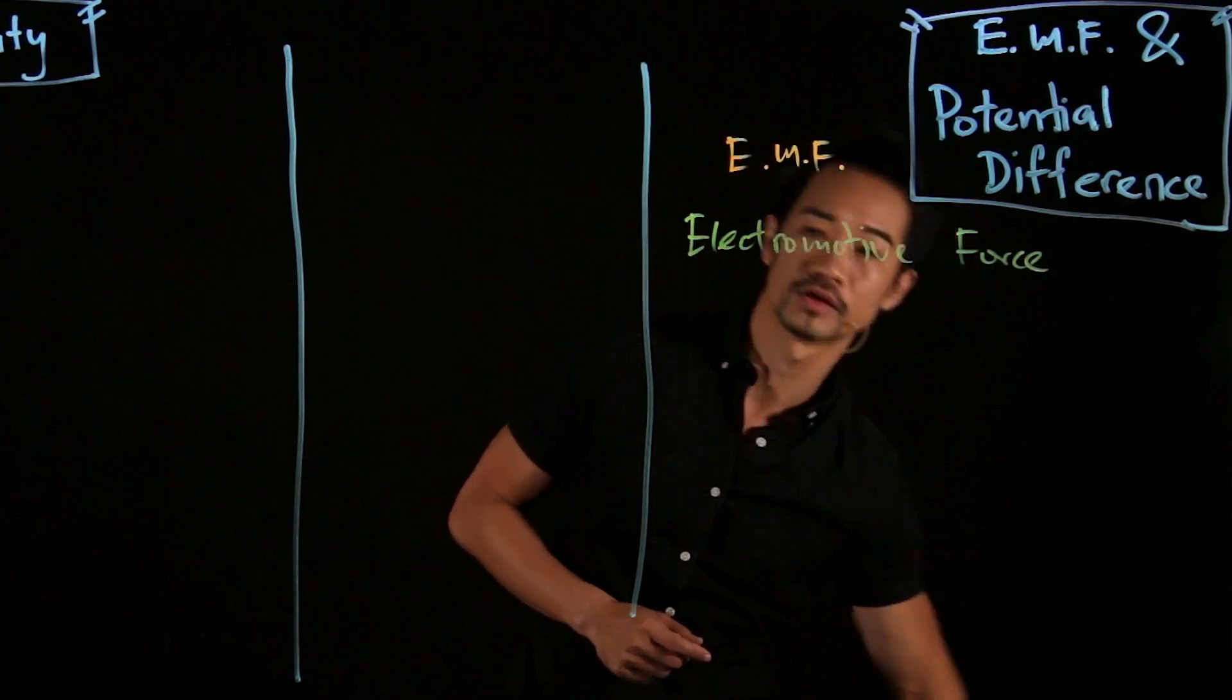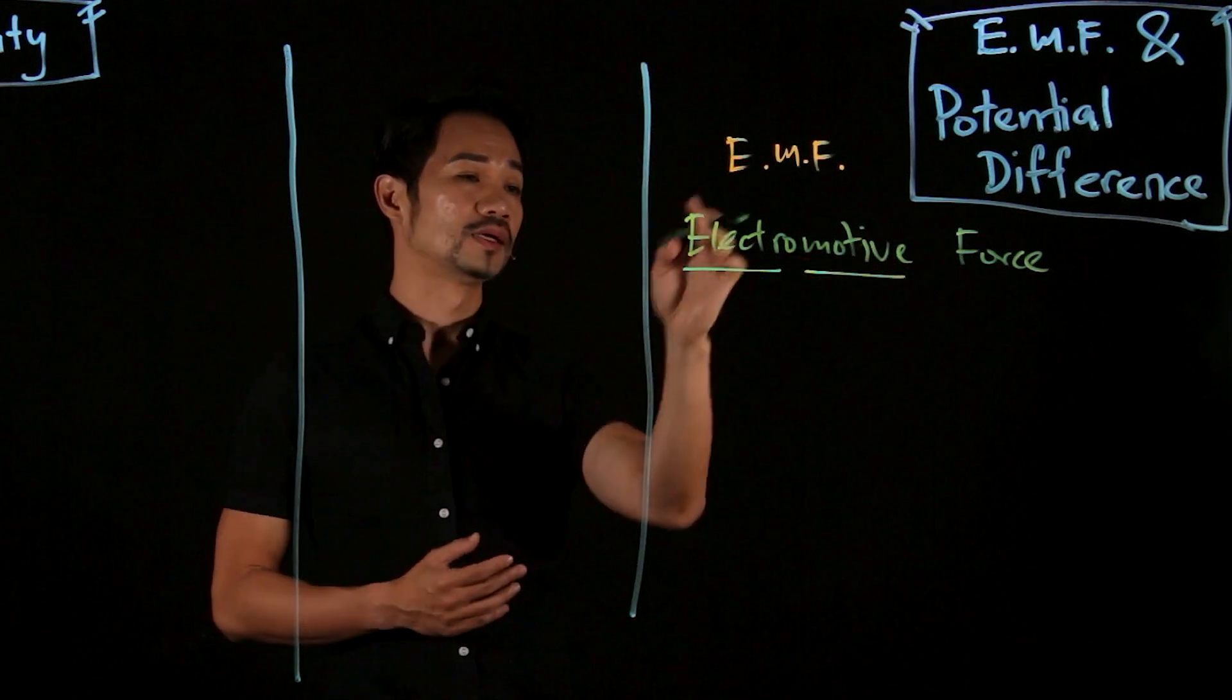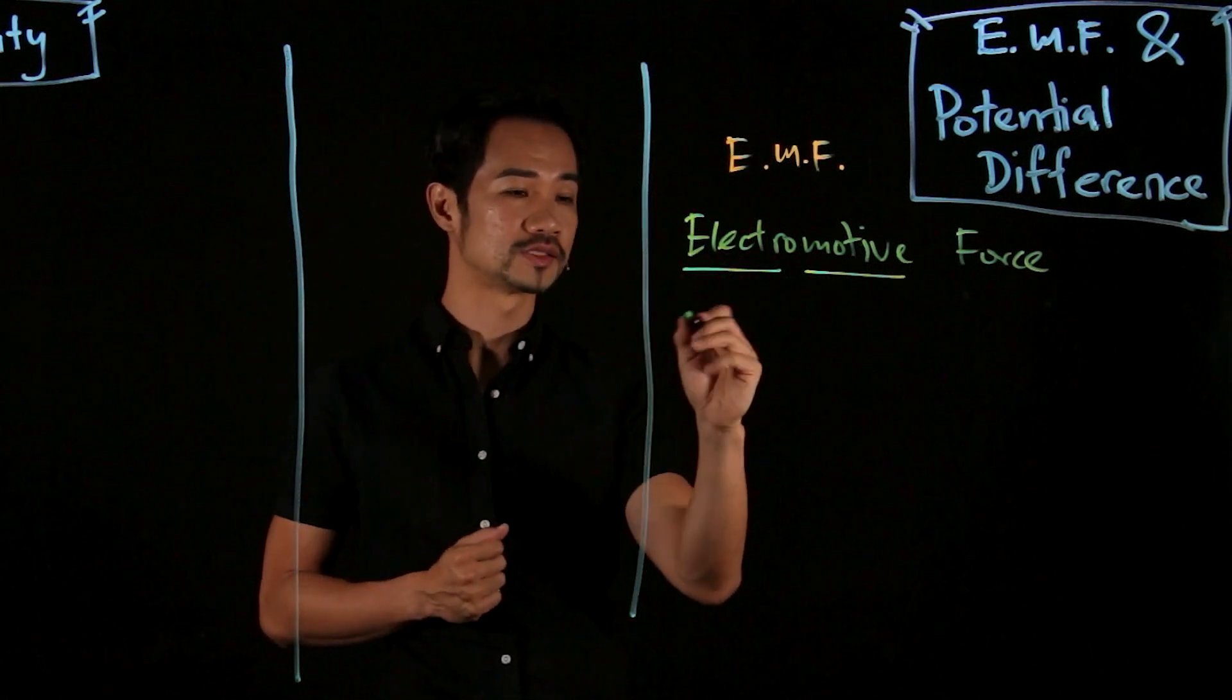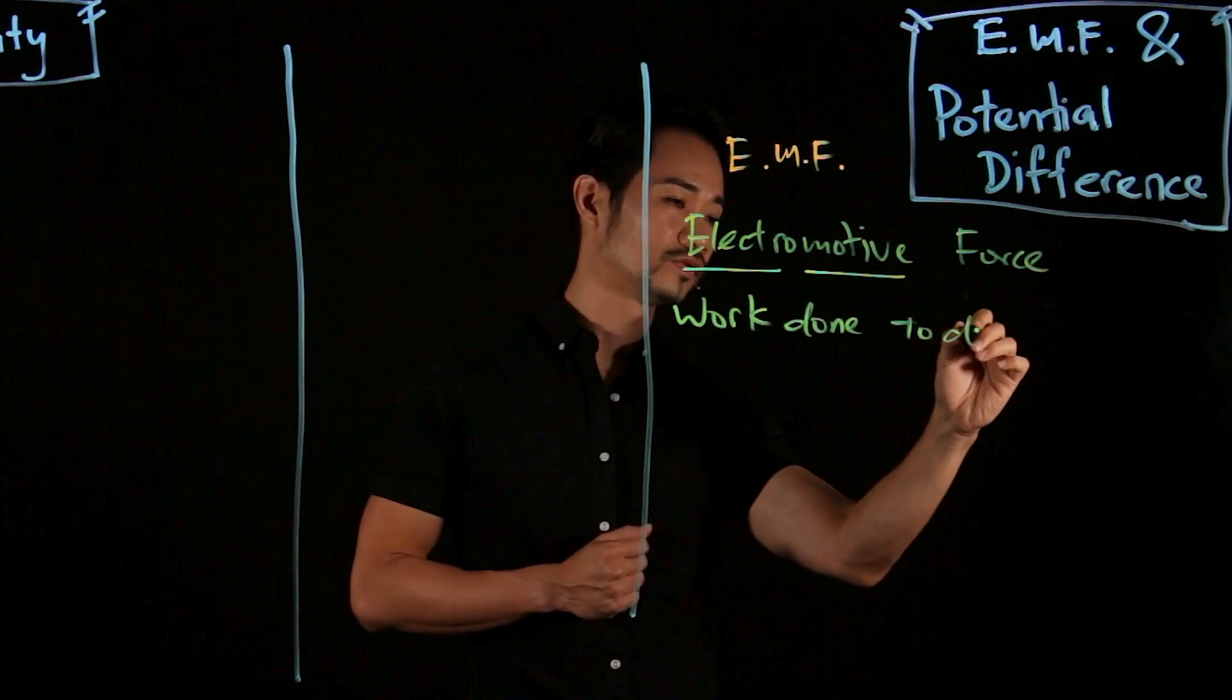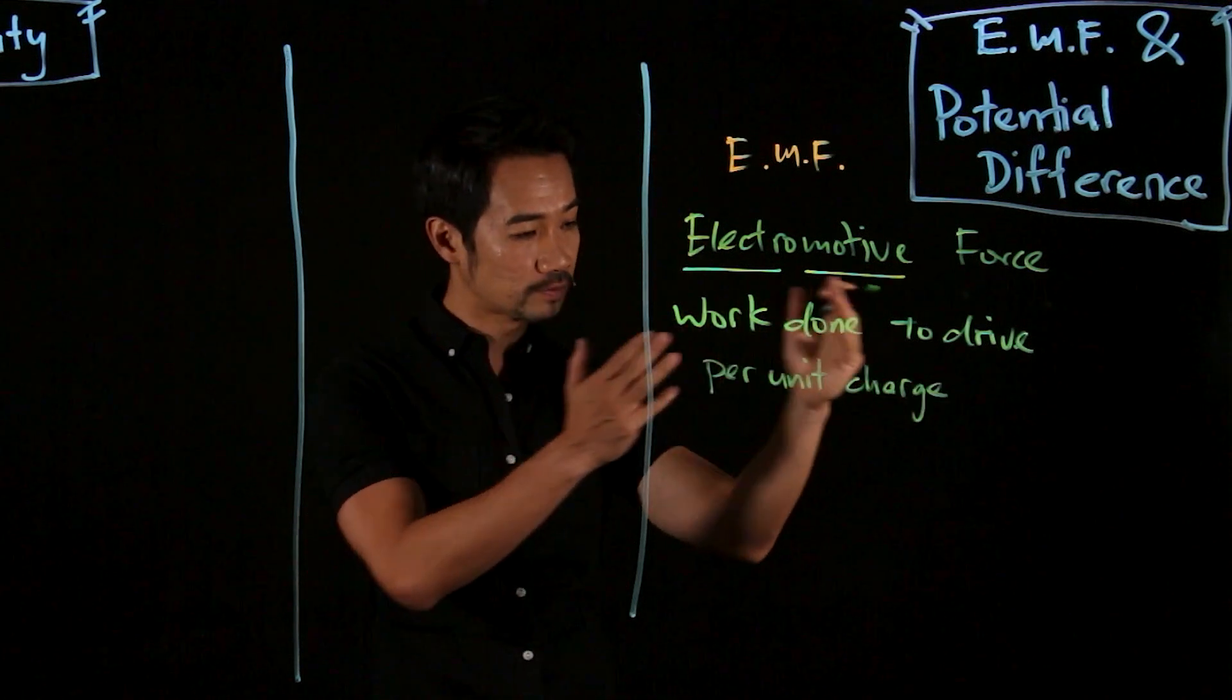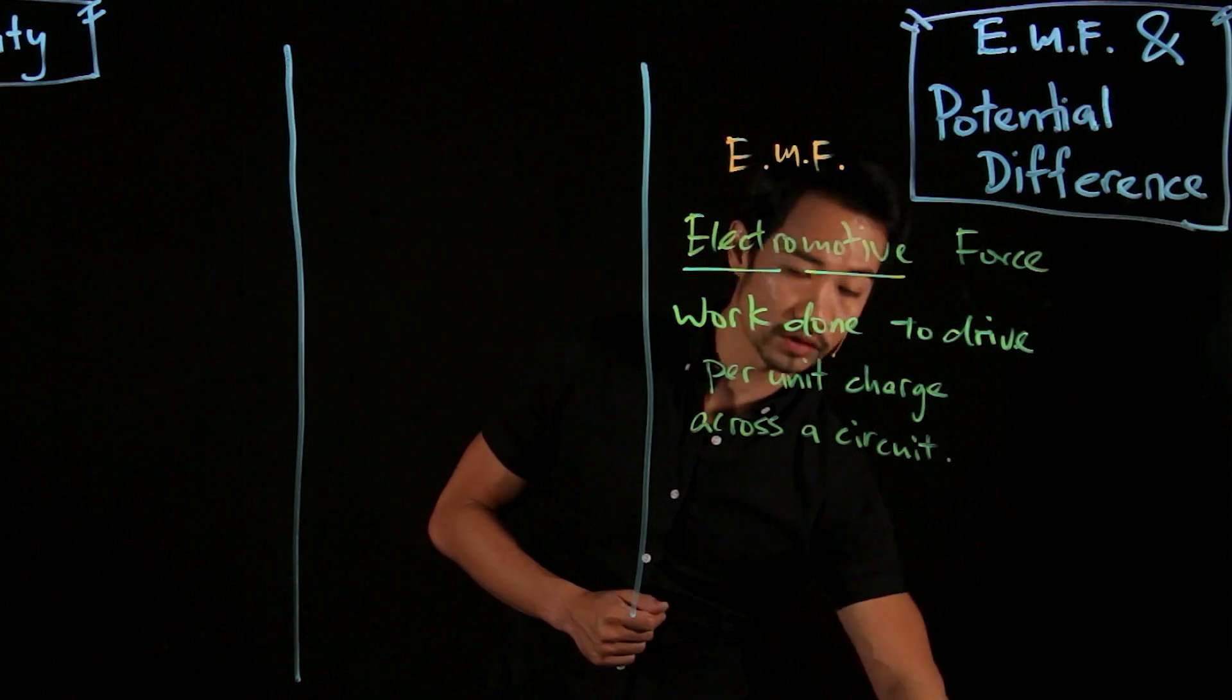So from the term itself, you can kind of guess what it means. The first word, electromotive—motive talks about movement. Electro refers to electrons. And then force. So electromotive force means it's the work done to drive per unit charge across a circuit.